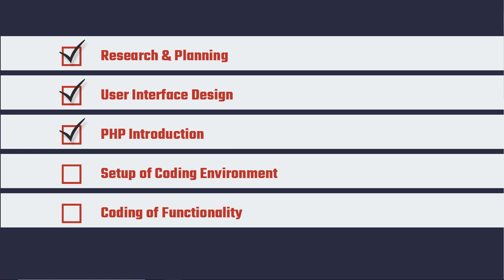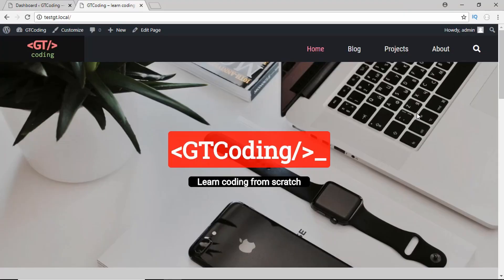In the third module I'm going to give you an introduction to PHP, where we are going to look at some of the basic concepts of PHP which we are going to use in this website. In the fourth module we are going to set up our environment to develop this website locally using a tool called Local by Flywheel. In the fifth module we are going to write our PHP code to make this website dynamic and create a custom WordPress theme using the design we had created. If possible I will also show you how to host this website on a real server.